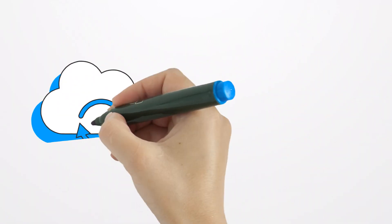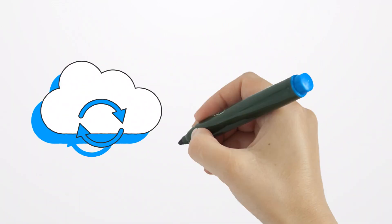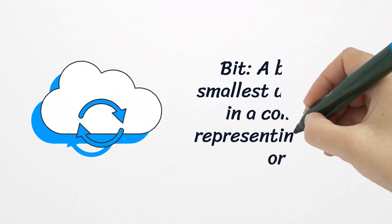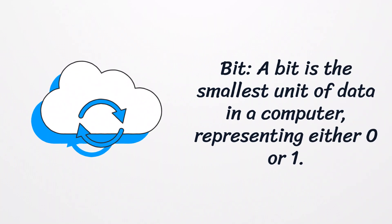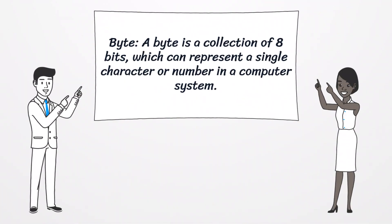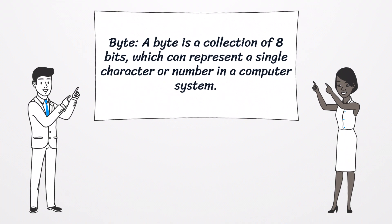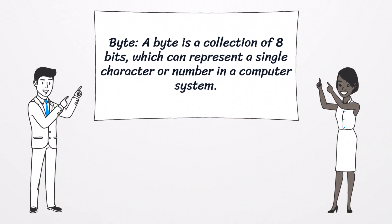Bit. A bit is the smallest unit of data in a computer, representing either 0 or 1. Byte. A byte is a collection of 8 bits, which can represent a single character or number in a computer system.